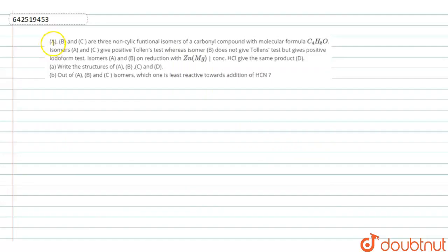Hi everyone, today we are just going to see a problem in organic chemistry. A, B, C are three non-cyclic functional isomers of carbonyl compounds with molecular formula C₄H₈O. Isomers A and C give positive Tollen's test, whereas isomer B does not give Tollen's test but gives positive iodoform test.